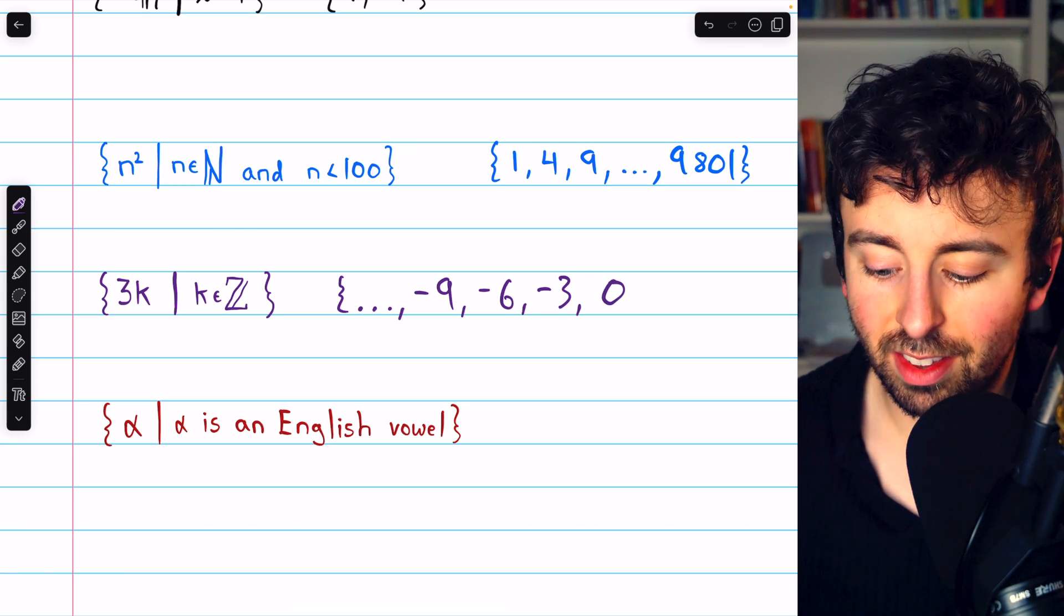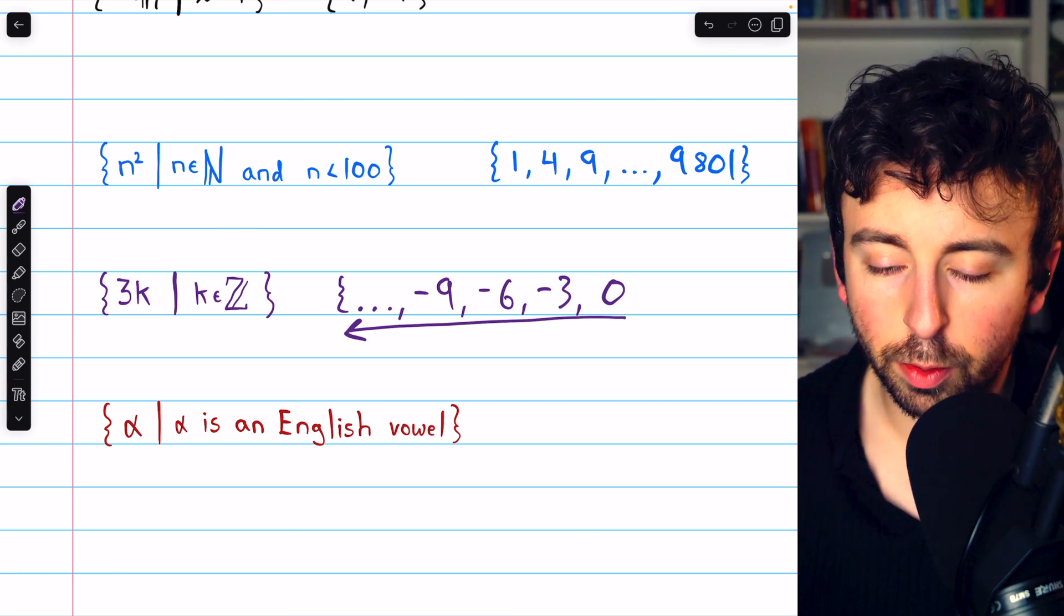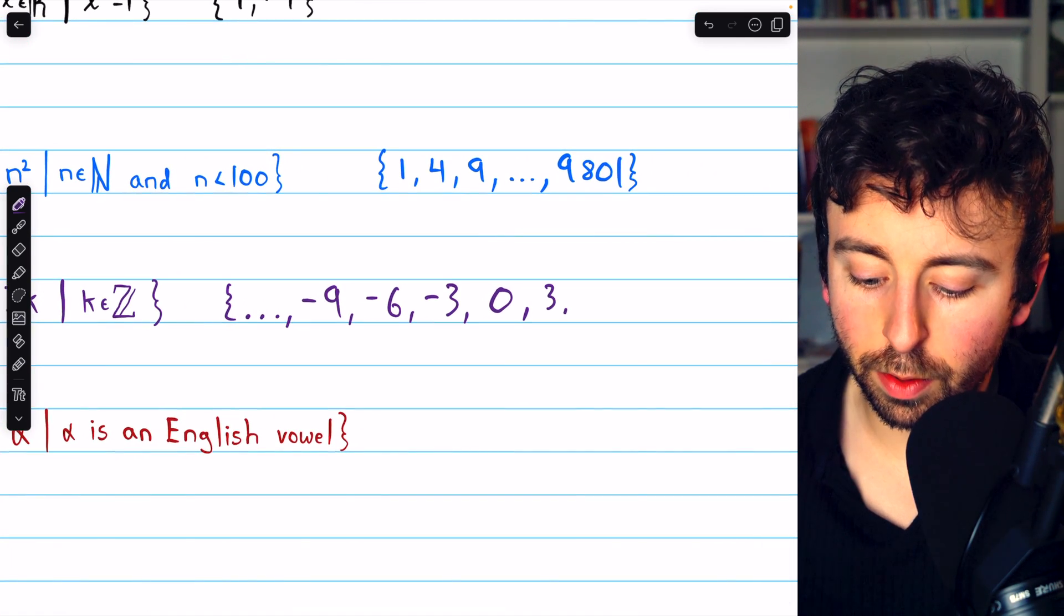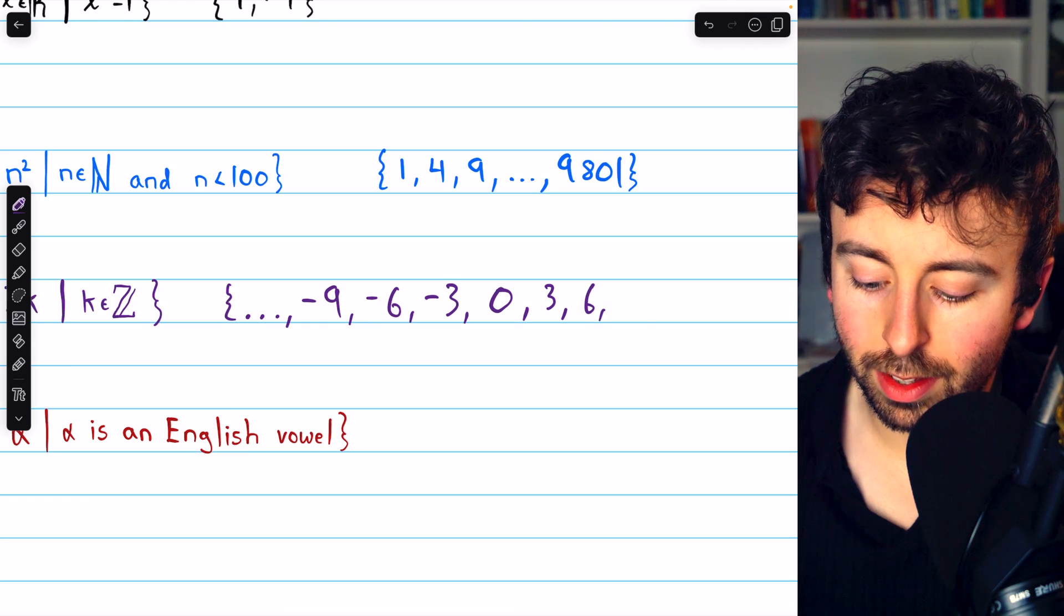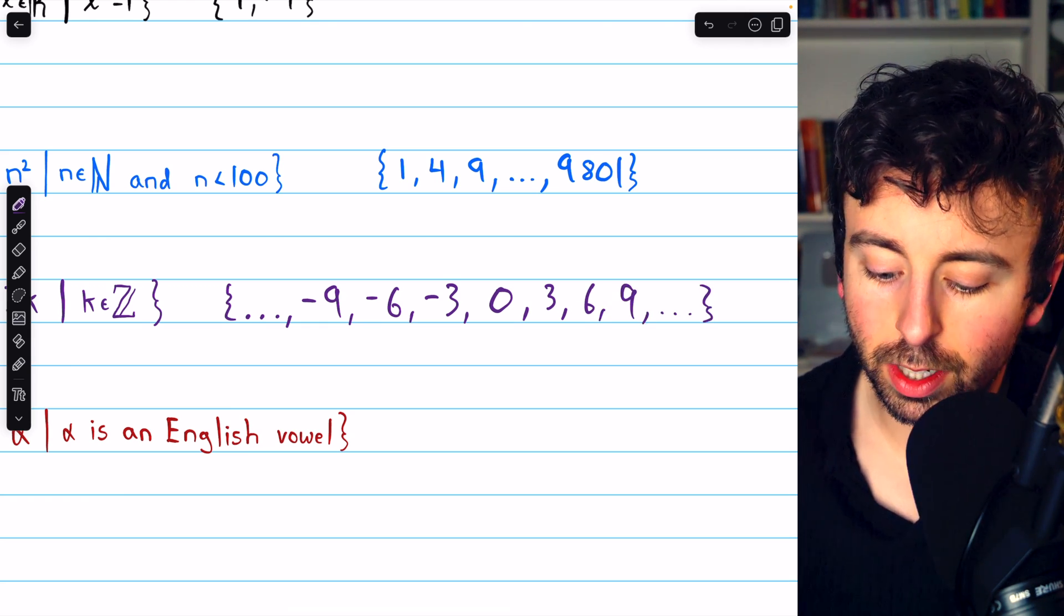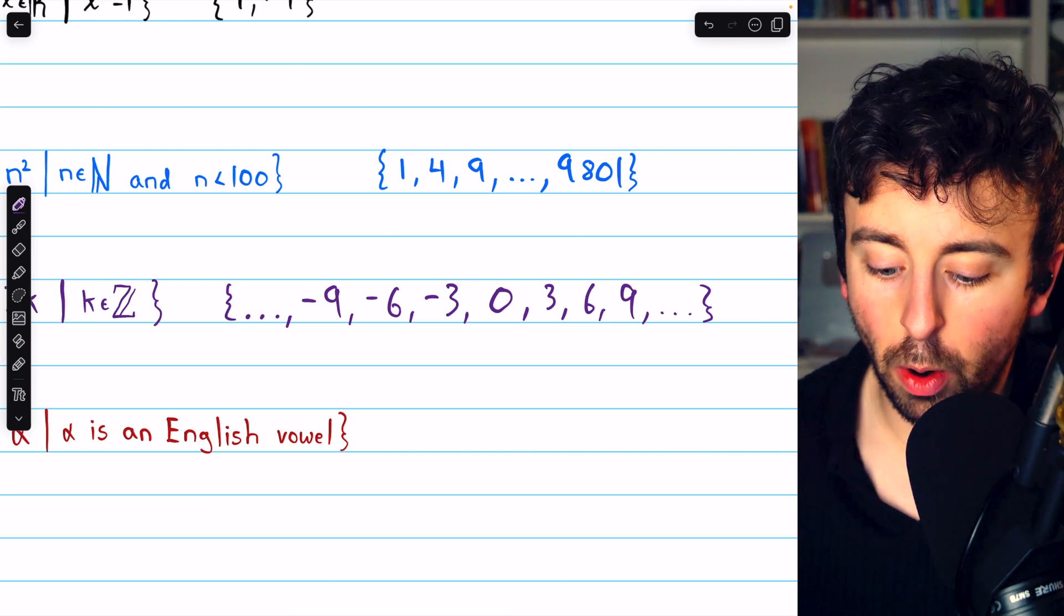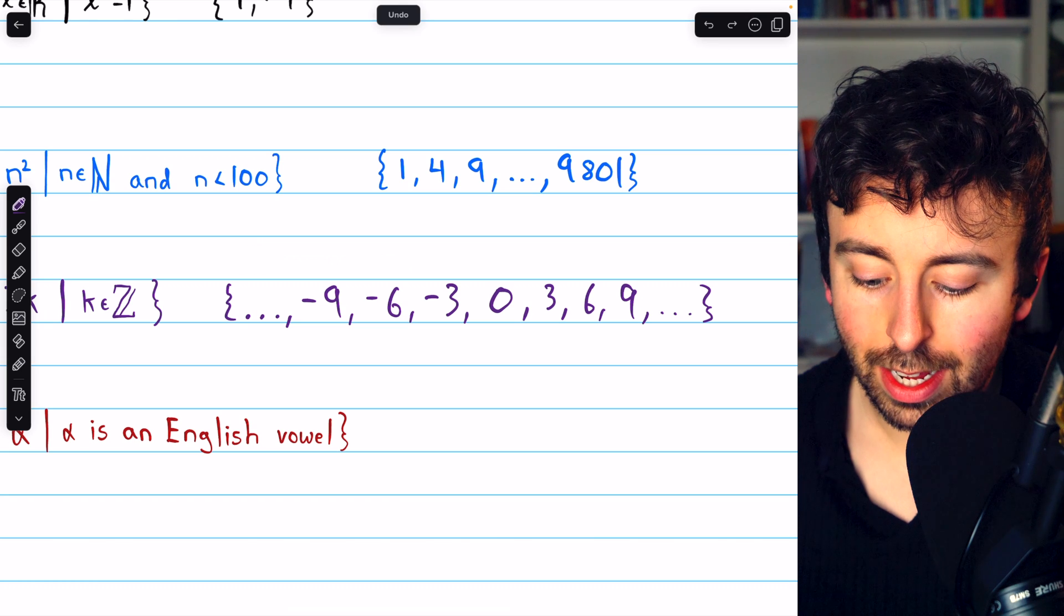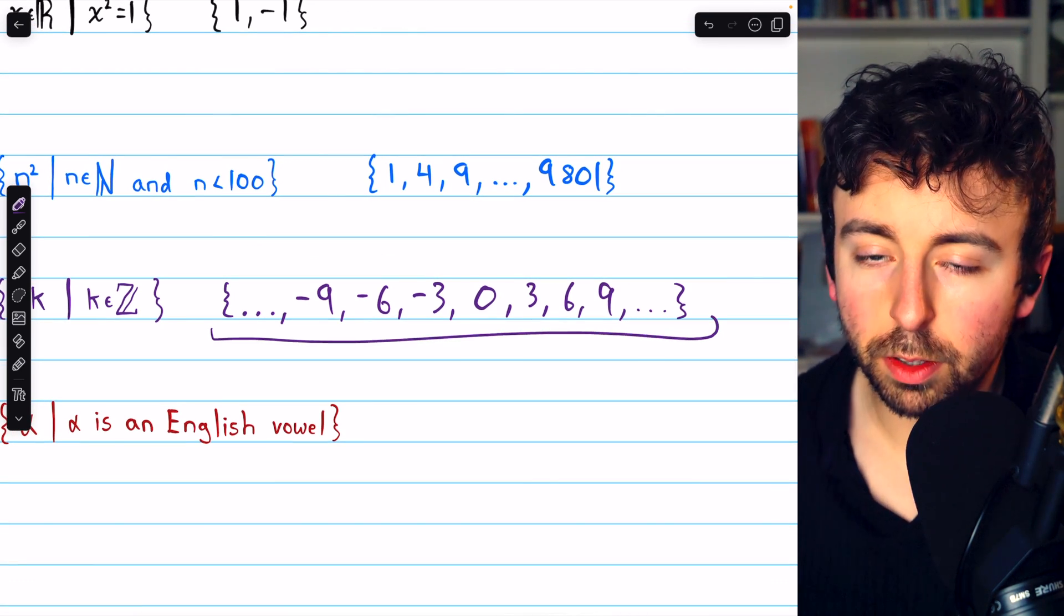So this suggests that we're taking multiples of 3 forever, going in the negative direction. But then I also need to capture the positive multiples of 3: 3, 6, 9, dot, dot, dot. So this makes the pattern clear and makes it clear that we're going all the way in the negative direction and to the positive direction. This is the set containing all multiples of 3.